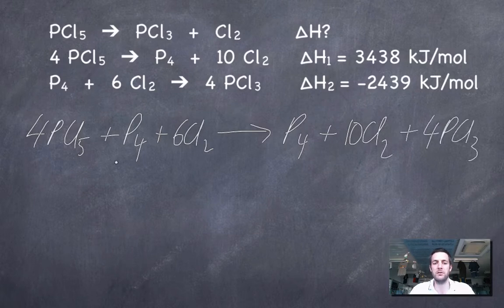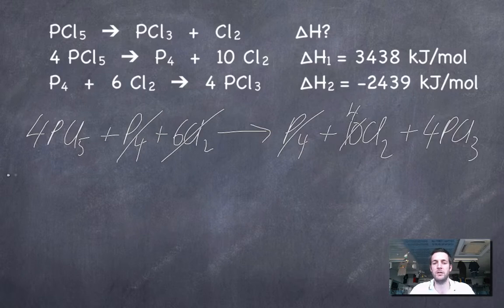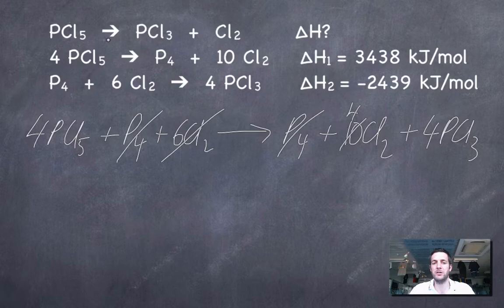Let's see what cancels: the P4s and these 6Cl2s cancel with 6 of them, so I'm left with 4Cl2. Now notice here, this equation looks very much like that equation, but it's 4 times greater than that equation.